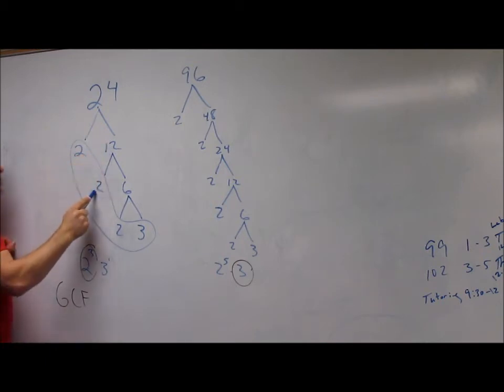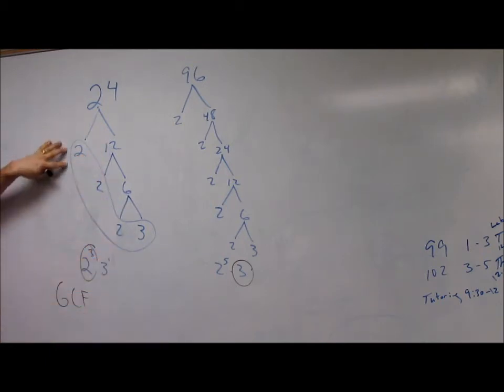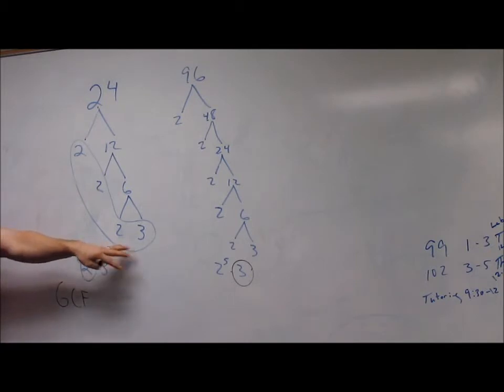Divide by 2, it's 12. Then 2 and 6. Then 2 and 3. You have your exponential form: 2 to the third, 3 to the first.